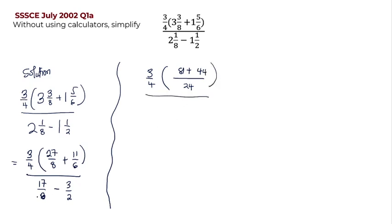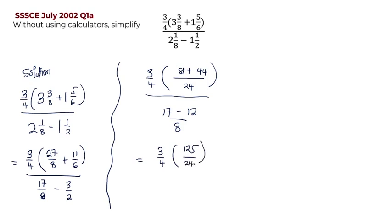All on: over here the same thing, we have 8 and 2 as our denominators, so the LCM is 8. 8 will go into 8 once, 1 multiplied by 17 is 17, minus 2 going into 8 four times, 4 times 3 will give us 12. So this is equal to 3 on 4, into bracket, 81 plus 44 will give me 125 on 24, all on 17 minus 12 will give me 5 on 8.